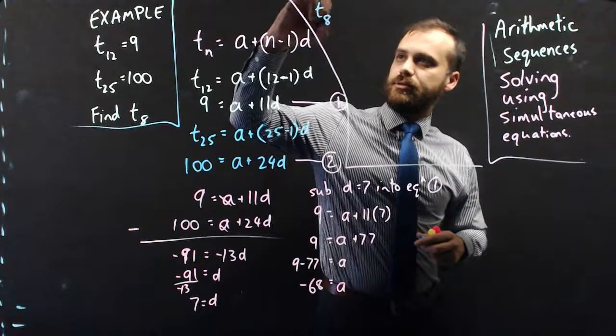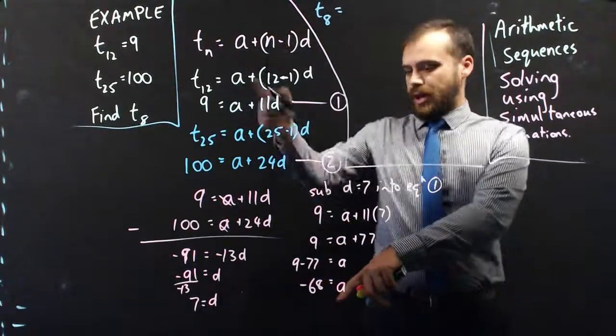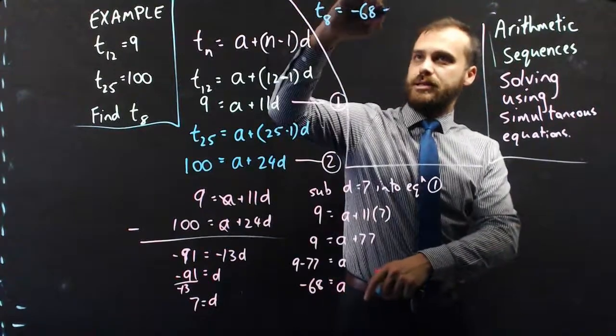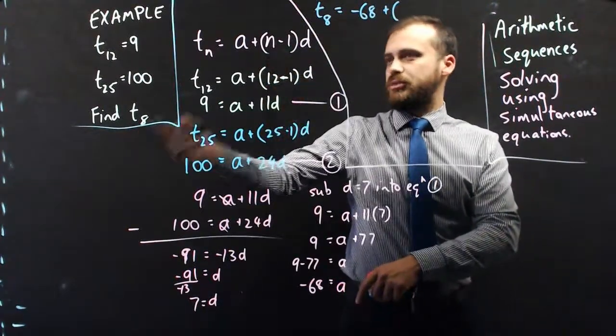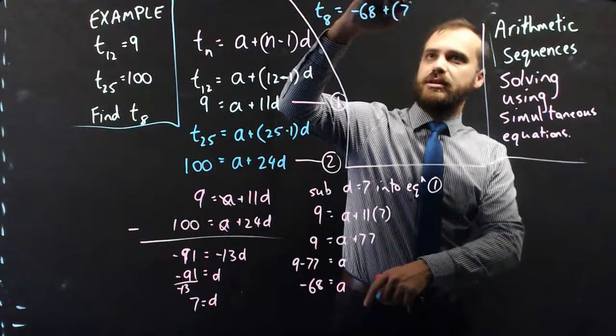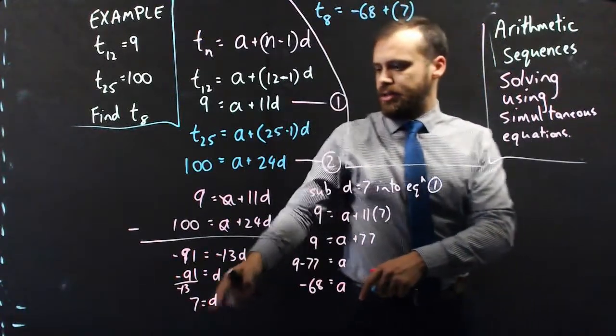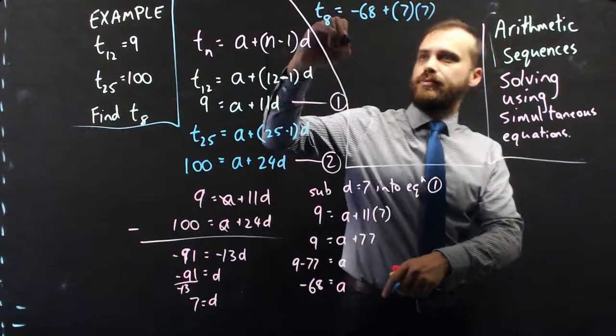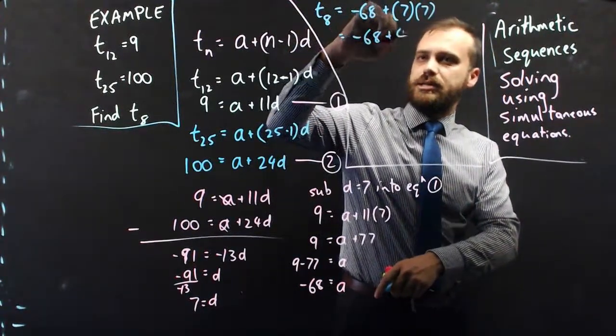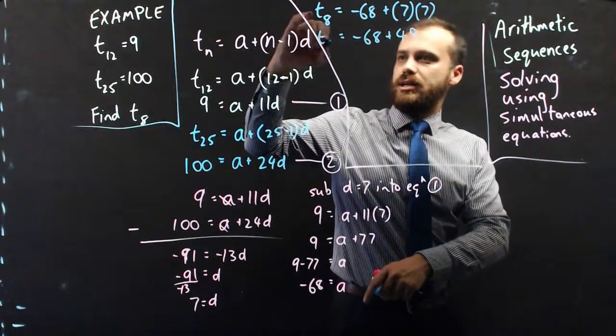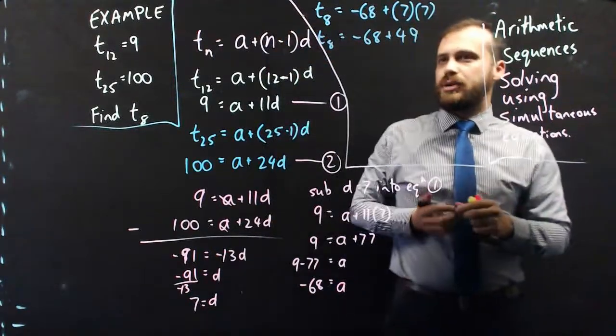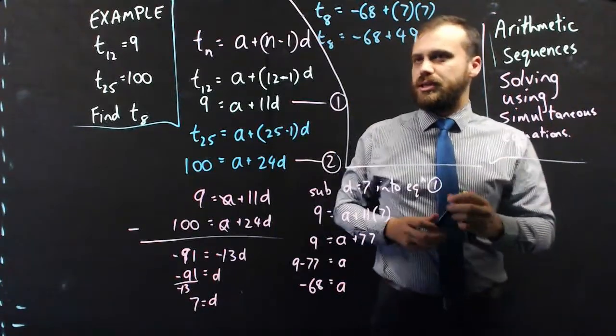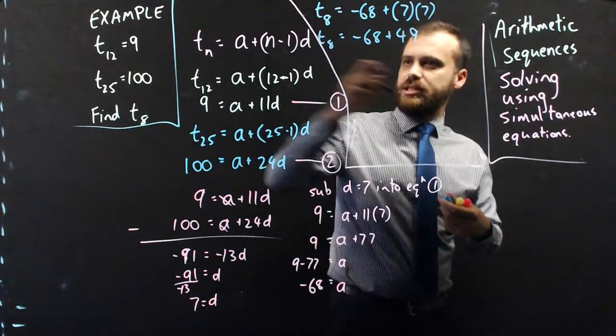Term 8 is going to be equal to a, which I know is negative 68, plus n minus 1. Well, I'm finding term 8, so n minus 1 is going to be 7. And then d, the common difference, is also 7. So now I have negative 68 plus 49, and that's going to equal term 8. So negative 68 plus 50 would be negative 18. So negative 19.